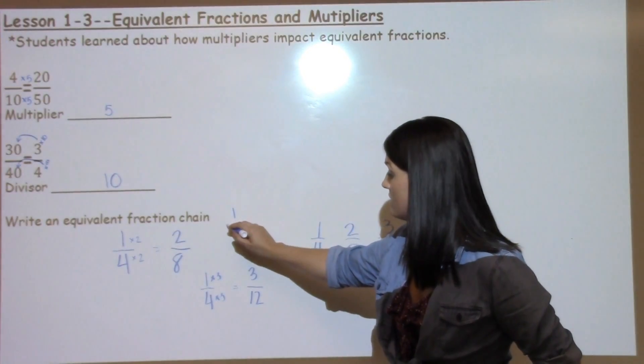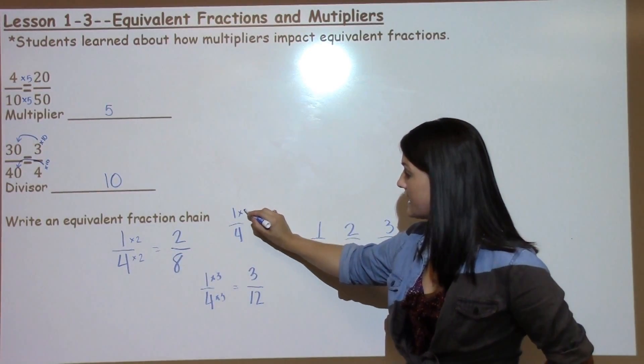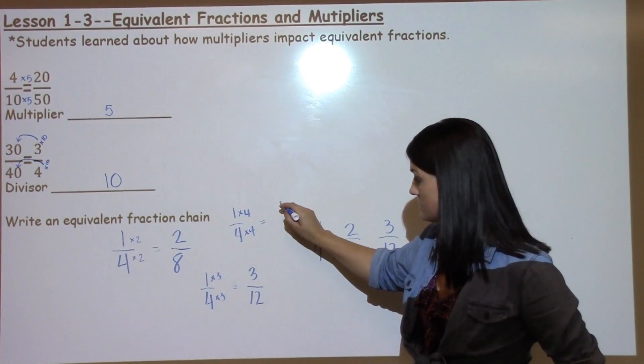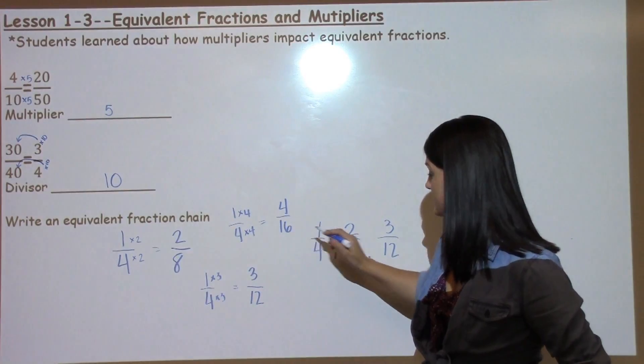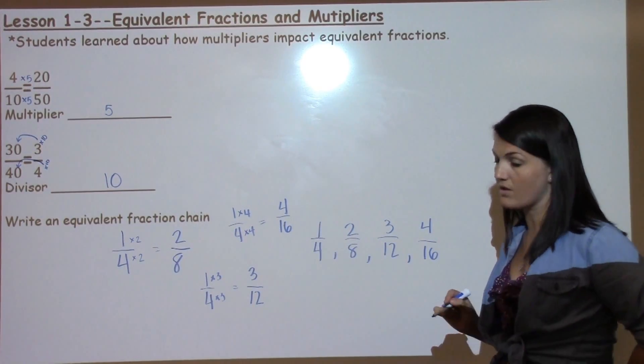And we'll do one more. We start with that same unit fraction. Students could take 1 times 4 and 4 times 4 to get 4 sixteenths, which is now also part of that equivalent fraction chain.